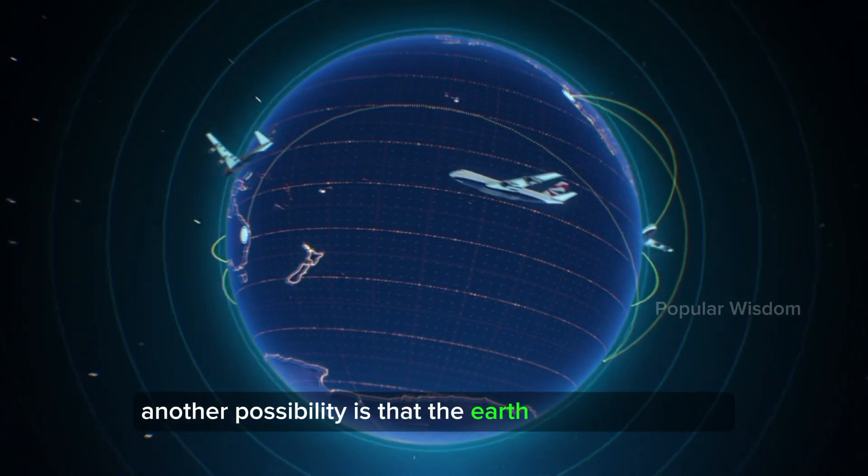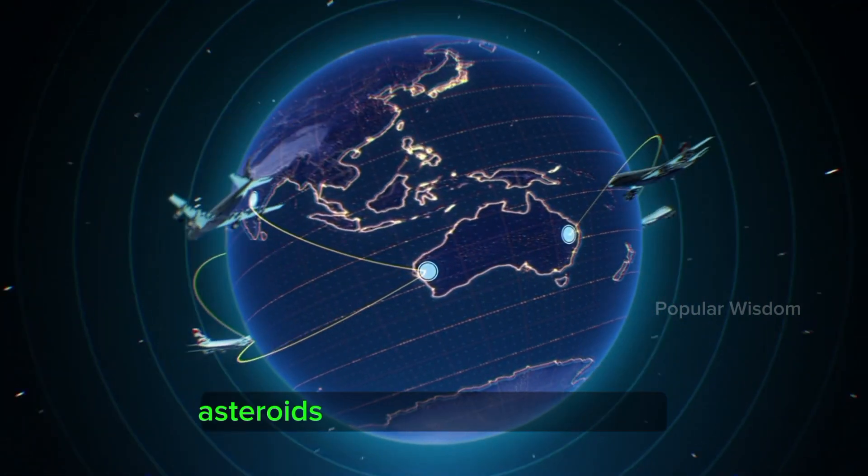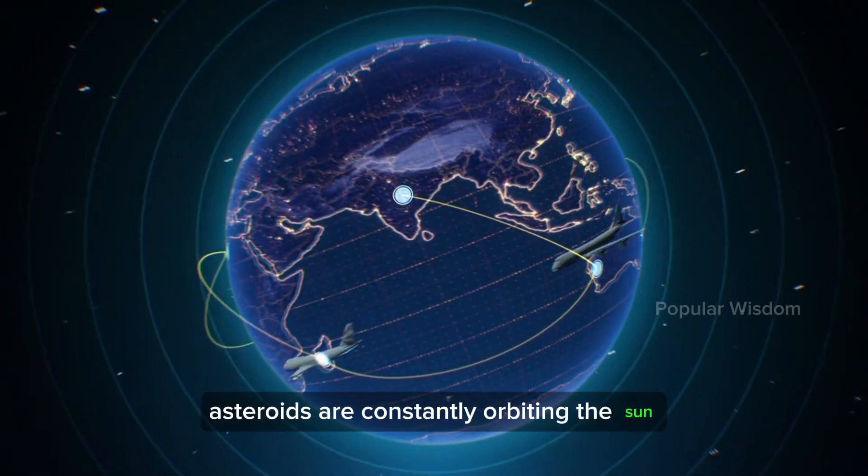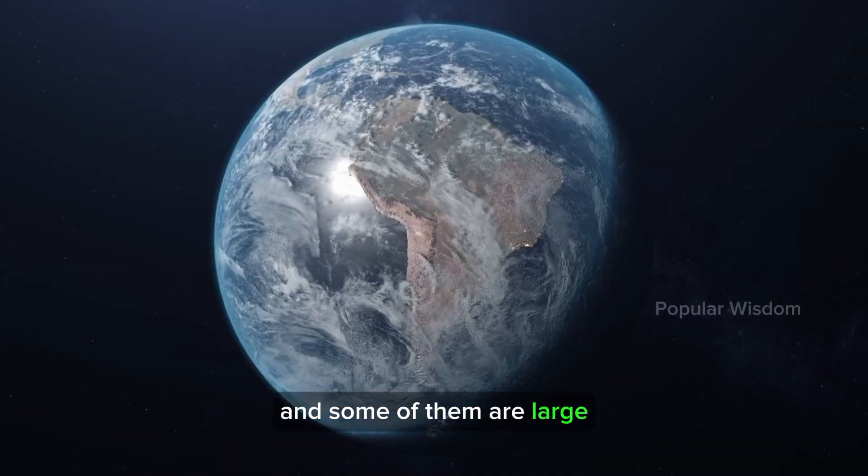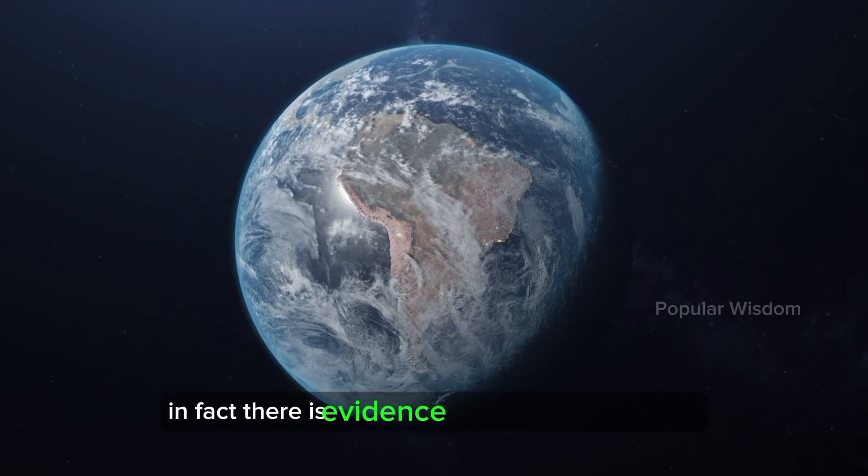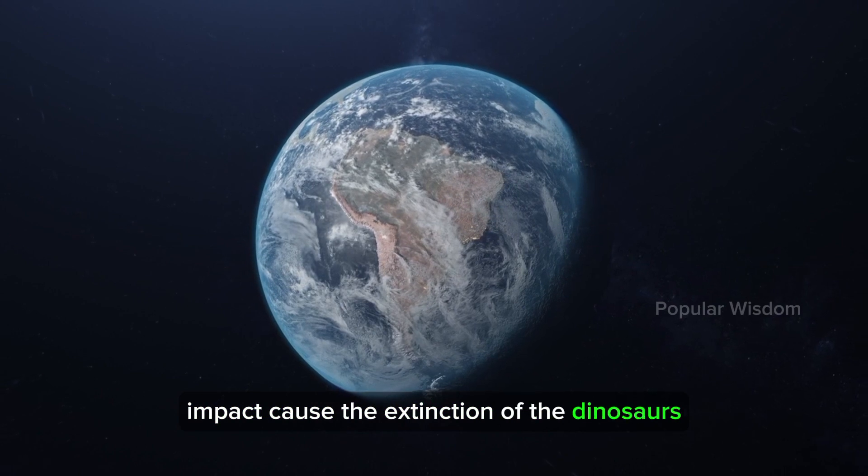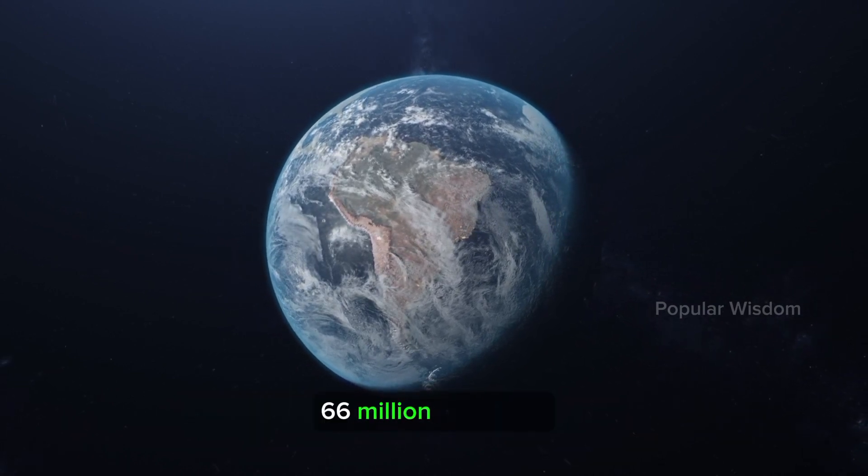Another possibility is that the Earth will be destroyed by a massive asteroid impact. Asteroids are constantly orbiting the Sun, and some of them are large enough to cause catastrophic damage to Earth. In fact, there is evidence that a massive asteroid impact caused the extinction of the dinosaurs 66 million years ago.